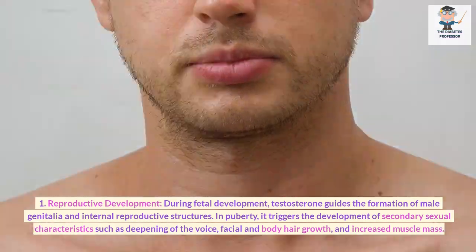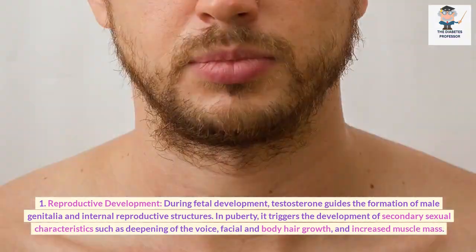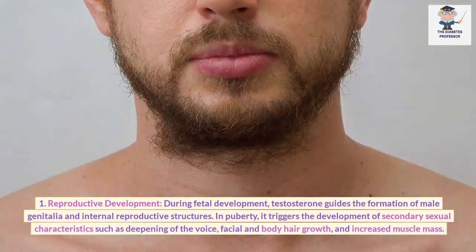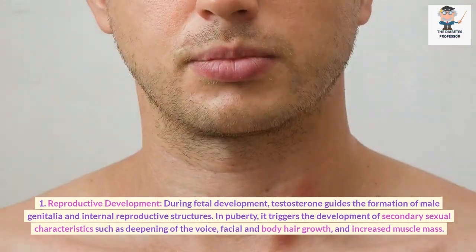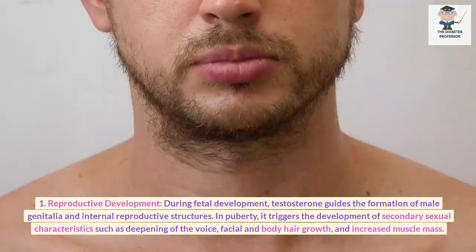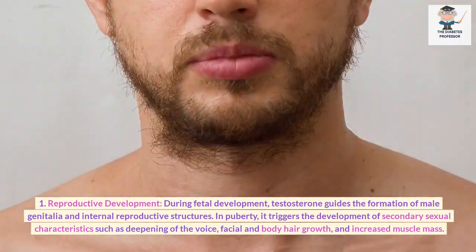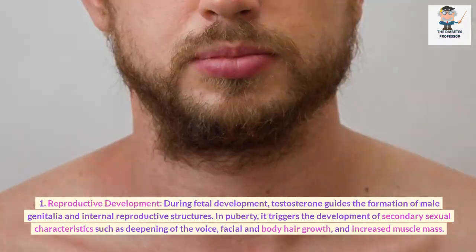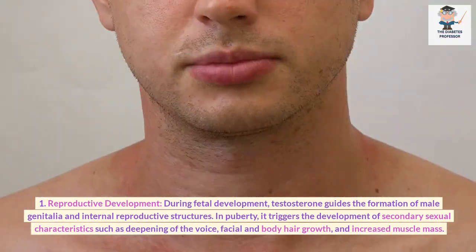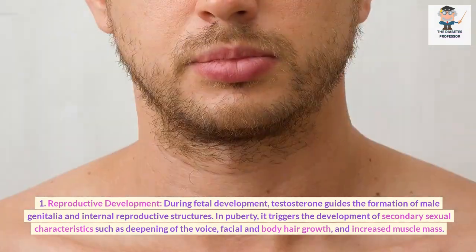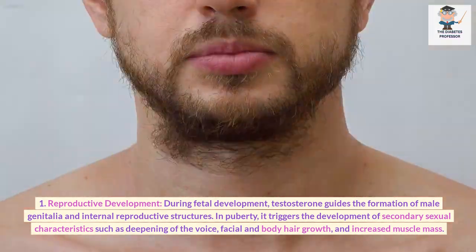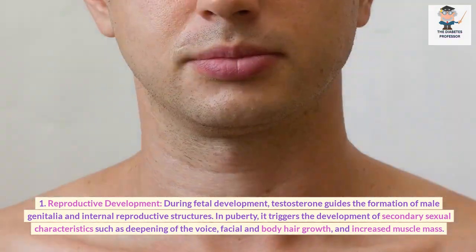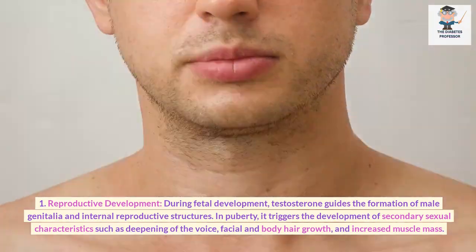Reproductive Development. During fetal development, testosterone guides the formation of male genitalia and internal reproductive structures. In puberty, it triggers the development of secondary sexual characteristics such as deepening of the voice, facial and body hair growth, and increased muscle mass.